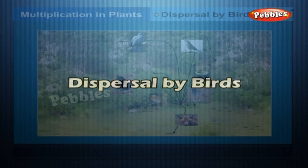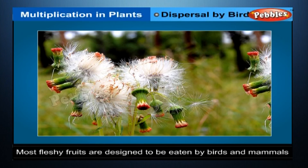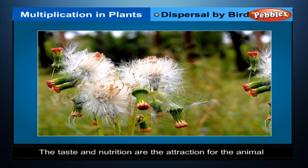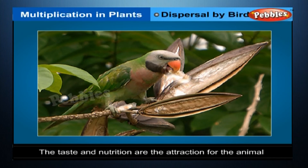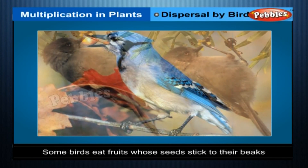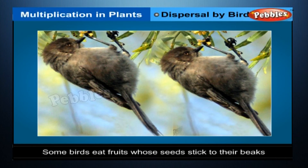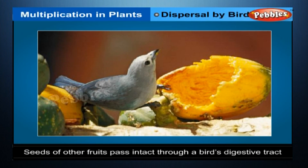Dispersal by birds: most fleshy and brightly coloured fruits are designed to be eaten by birds and mammals. The taste and nutrition are the attraction for the animal to return again and again. The seed may pass out in the faeces or may be thrown away. Some birds eat fruits whose seeds stick to their beaks and are then rubbed off somewhere else. Seeds of other fruits pass intact through a bird's digestive tract.